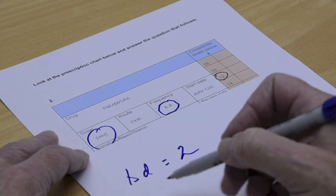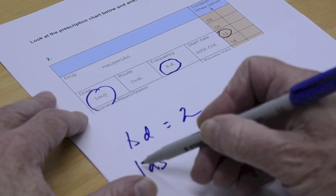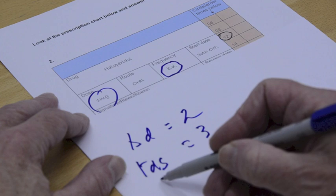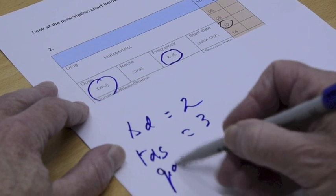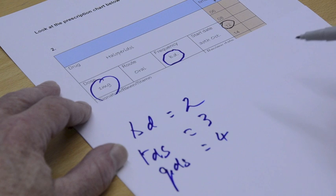The other type you might come across is TDS, which is three times a day. And you can even have QDS, which is four times a day.